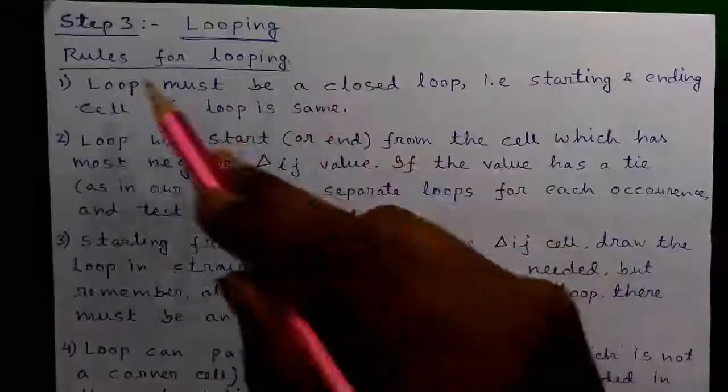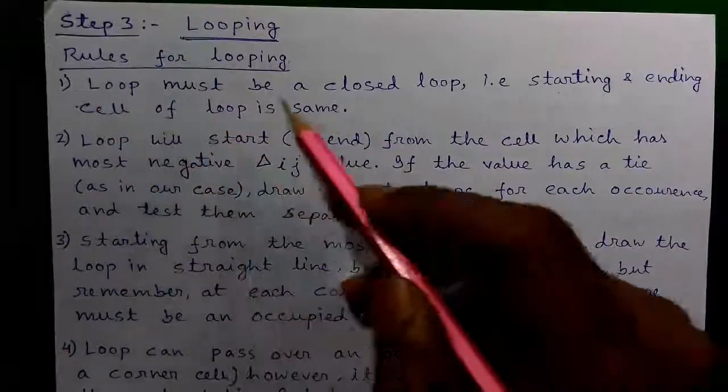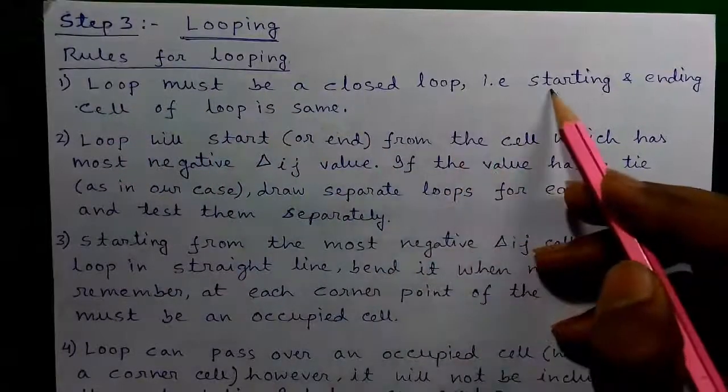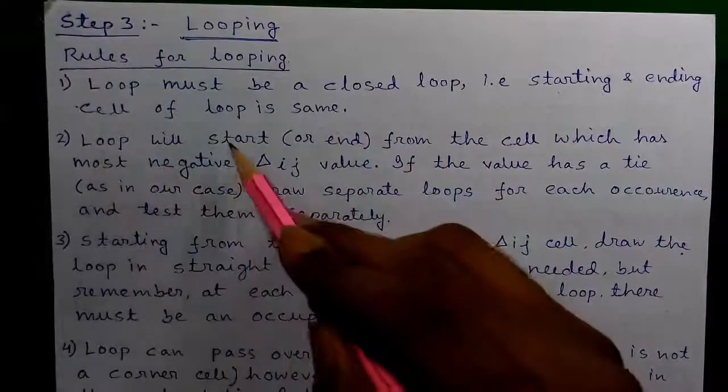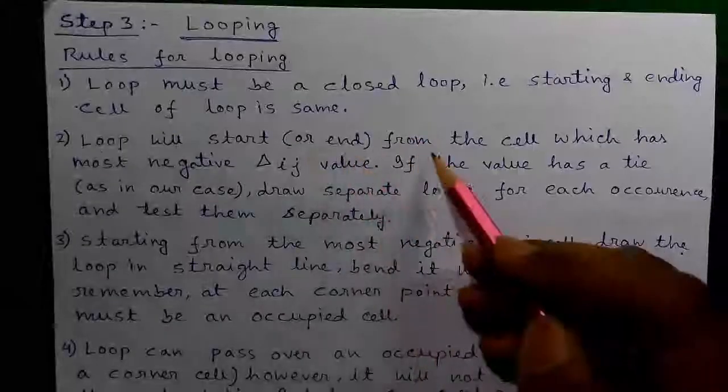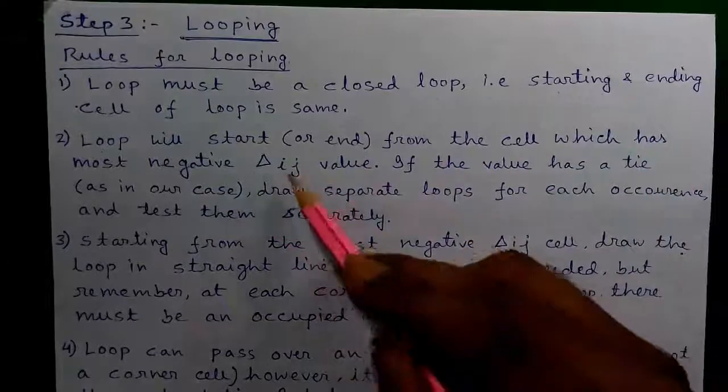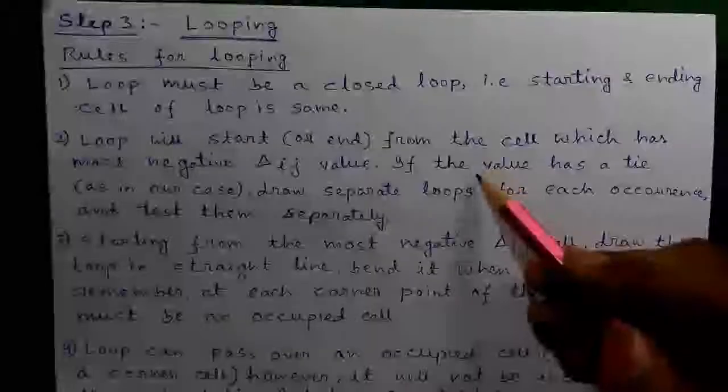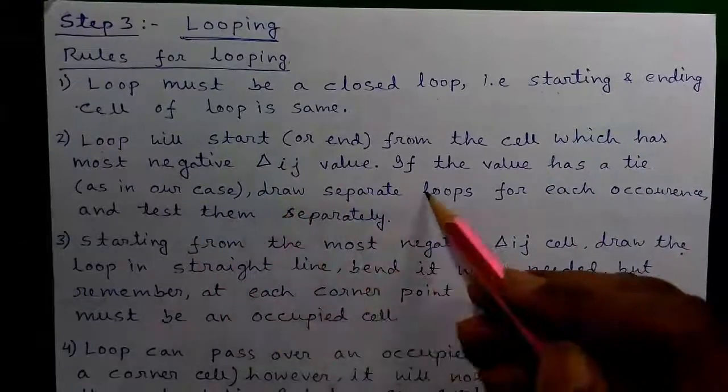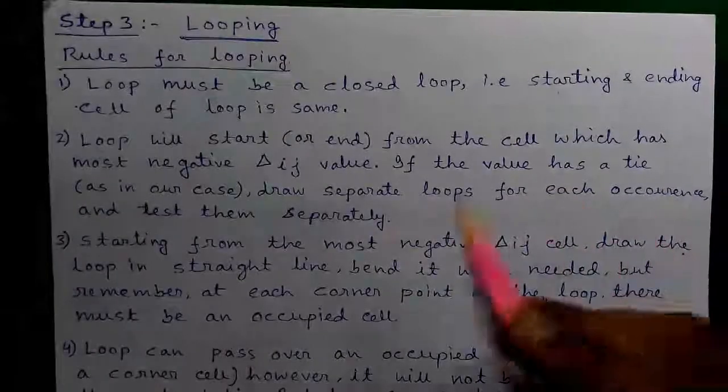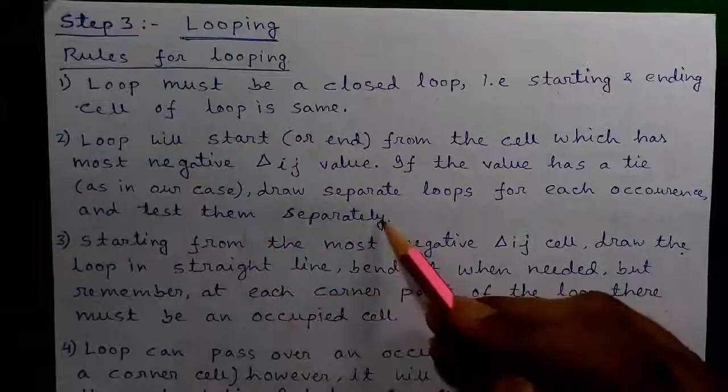Rules for looping: Rule 1 - The loop must be a closed loop, that is the starting and ending cell of loop is same. Rule 2 - Loop will start or end from the cell which has the most negative del IJ value. If the value has a tie, as in our case, draw separate loops for each occurrence and test them separately.